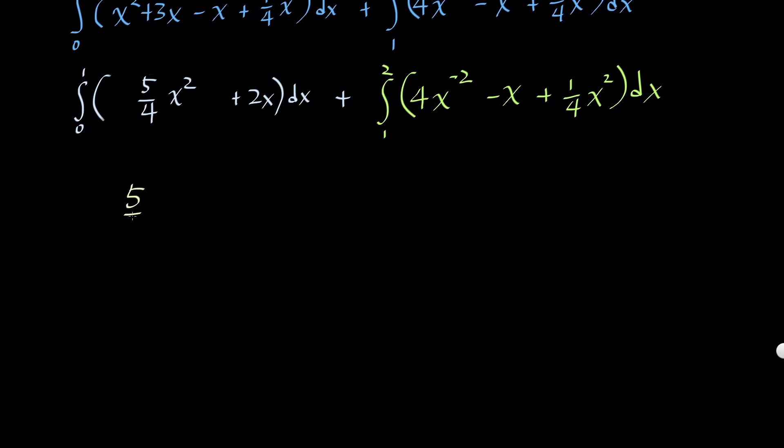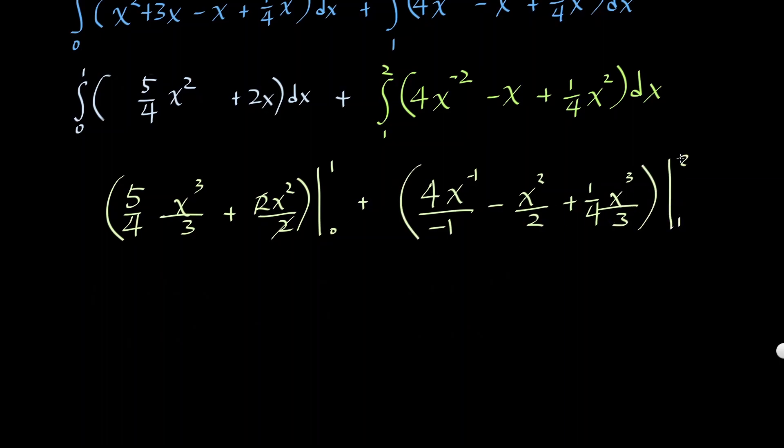So we could go 5 over 4x. You add 1 divided by 3. 2x squared over 2. We could cancel that out. And it's going to be from 0 to 1. Then we add 4x. You plus 1 divided by that number again. And you know how to do this. Oh, that should be cube. Everything. 1 to 2. So work on this.